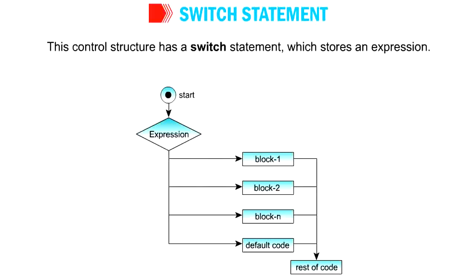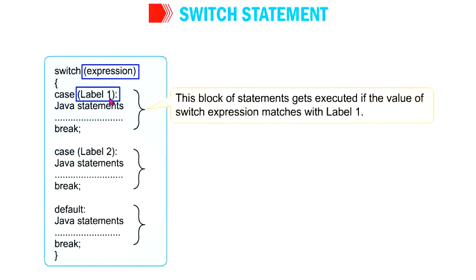The next one is the switch statement. The switch statement is used when there is a requirement to check multiple conditions in a program. It is a substitute for a large series of if-else-if statements. If you write the Java program using if-else-if it will be quite long; to avoid that you can use the switch statement as a substitute. This is the structure of the switch statement.